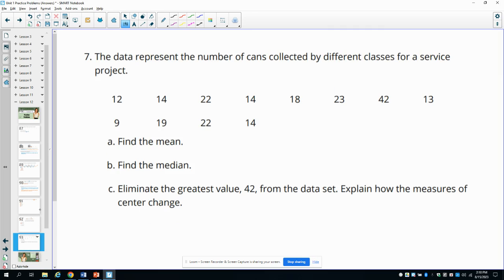Number seven, the data represent the number of cans collected by different classes for a service project. Find the mean. So remember for the mean, we would add up all of the data points. So we would get the total of all of these, and the total of this is 222. And then there are 12 data points. So we would divide 222 by 12, which would give us a mean of 18.5.